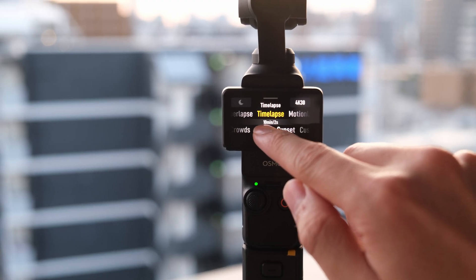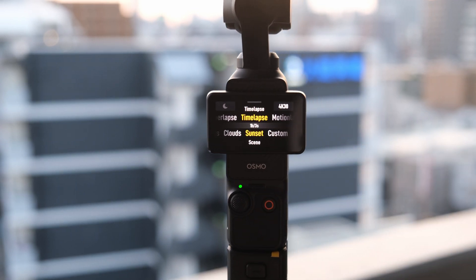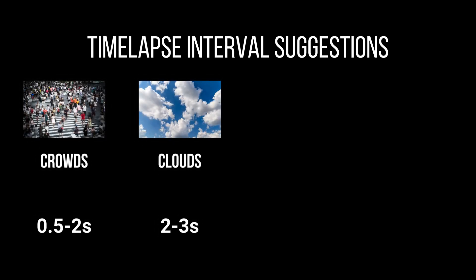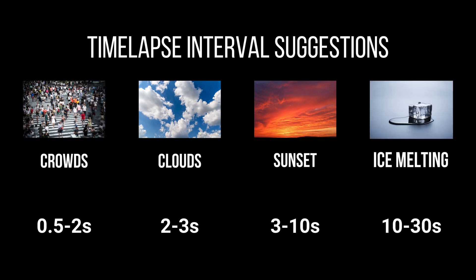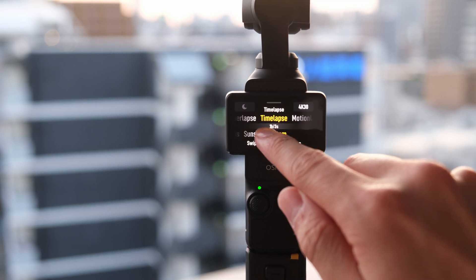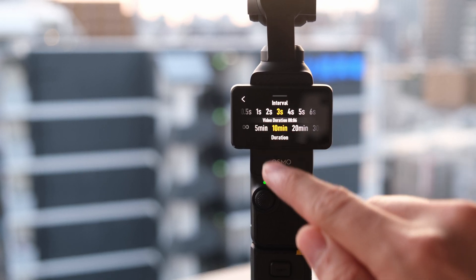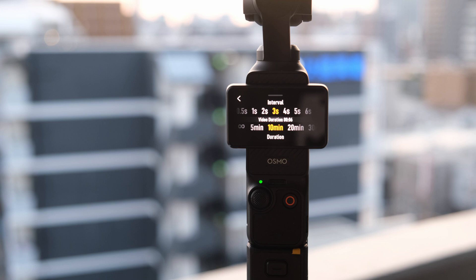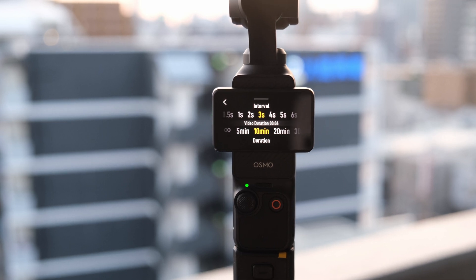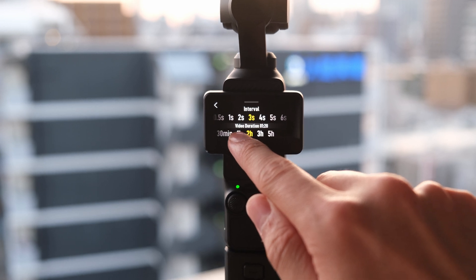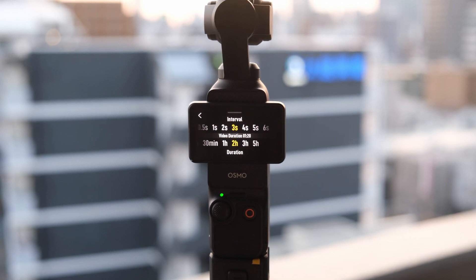DJI has given us some presets for crowds, clouds, and sunsets. The only difference between them is the interval and duration of the time-lapse. For faster moving scenes like a crowd, you generally want a shorter interval of say 0.5 to 2 seconds, whereas for sunsets you want a longer period because things aren't moving so fast. But I always recommend using the custom option to set the interval and duration manually. Since the sun is setting, I'm going to set the interval to 3 seconds and for the duration I'm going to let it capture this scene for 2 hours. Since the time-lapse will be played back at 30 frames per second, this will result in a 1 minute 20 second time-lapse clip.